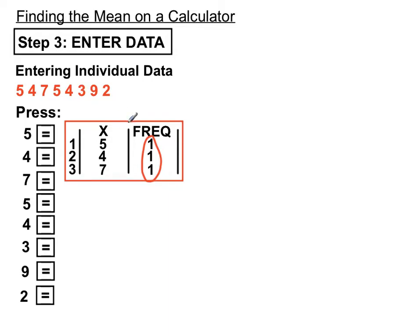To enter individual numbers we just press the number and press equals to lock it in. What that does on our screen is enter each score in the left hand column, and as a default assigns a frequency value of 1 to each of those scores. That's nothing to worry about.